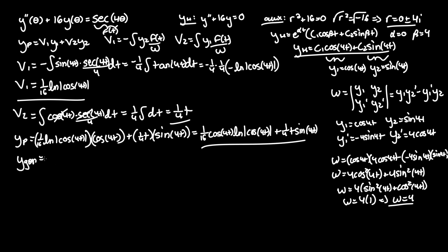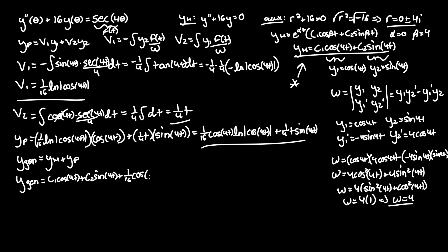As you know, y general equals y homogeneous plus y particular. So y general equals c1 cosine of 4t plus c2 sine of 4t, from the homogeneous solution, plus the particular solution: negative one-sixteenth cosine of 4t times ln of the absolute value of cosine 4t, plus one-fourth t sine of 4t. And that is our answer.